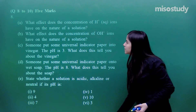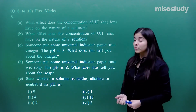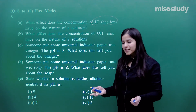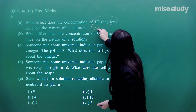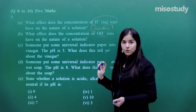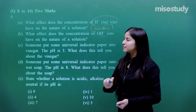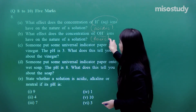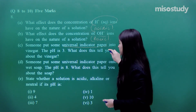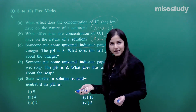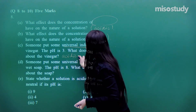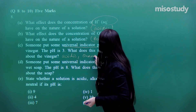Question number 8 is a 5-mark question. What effect does the concentration of H⁺ ions have on the nature of the solution? More the H⁺ ions, more acidic will be the solution — related to pH. What effect does the concentration of OH⁻ ions have? More the OH⁻ ions, the more basic the solution. Someone put universal indicator paper into vinegar — pH is 3. This tells us vinegar is acidic and the paper will turn orangish-red in colour.